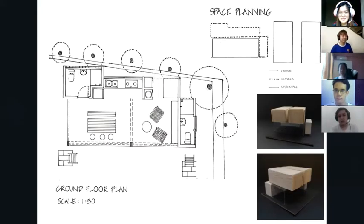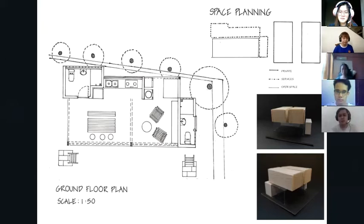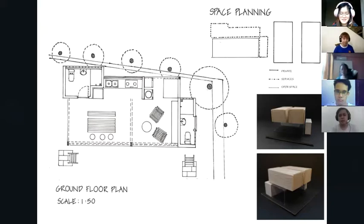For the space planning, this is how our space is formed from the plan. The dotted area, or the white model, reveals the services area, which includes the kitchen and the toilet. The transparent material represents the public area, and it is used because it is the open area. The upper level, made of balsa wood, is the private area where the bedrooms are located.